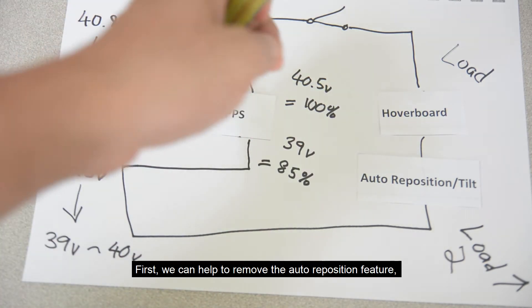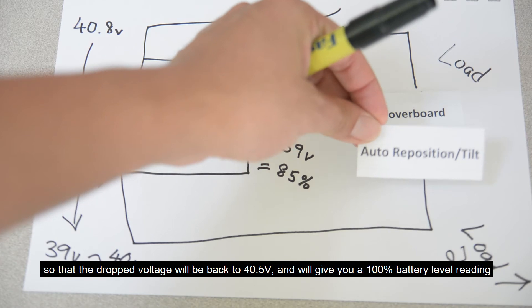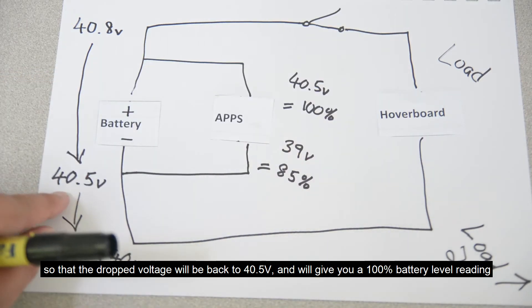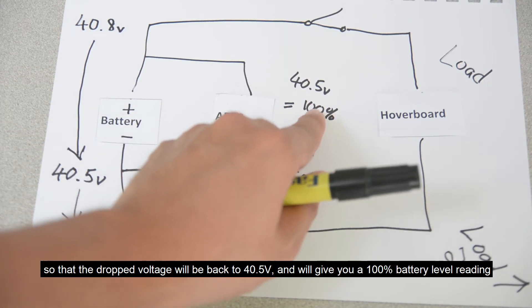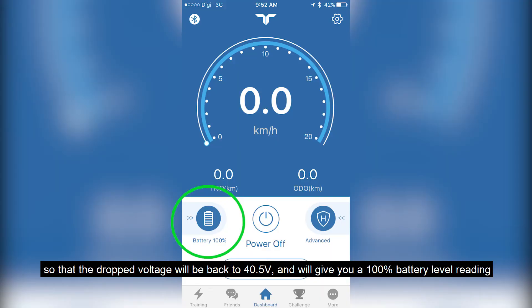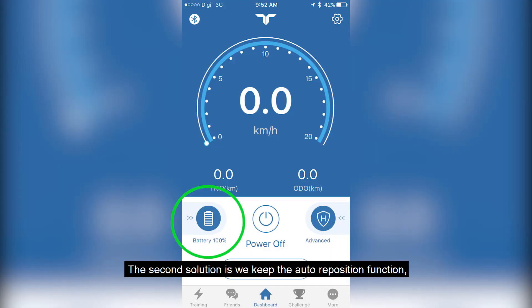First, we can help to remove the auto-reposition feature so that the drop voltage will back to 40.5V and will give you a 100% battery level reading.